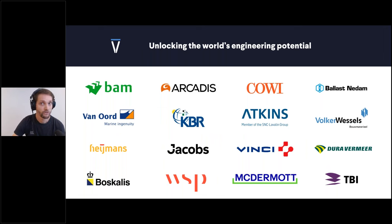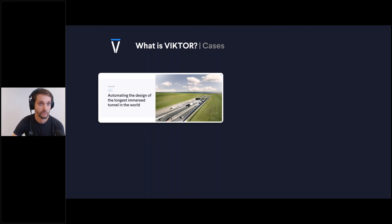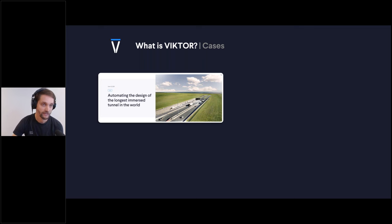Victor is used by the world's largest engineering and construction firms, as well as students, professors, freelancers, and small companies. For example, it's being used for the world's longest submerged tunnel connecting Germany and Denmark. With 90 tunnel sections of 18 kilometers, each with different conditions, automation allows optimal design of every section and provides a central single source of truth for all the data.